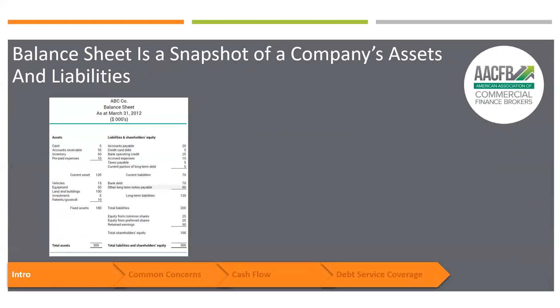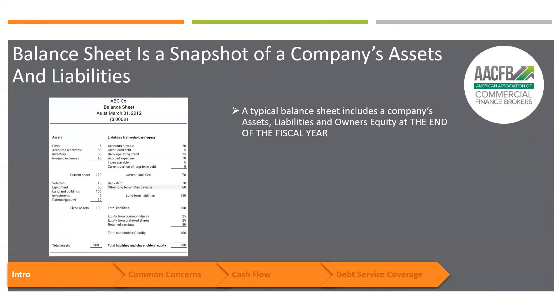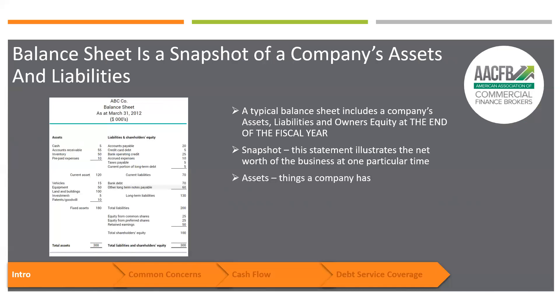Here is a balance sheet. A balance sheet is typically prepared at the end of the year, and it's a snapshot that illustrates the net worth of the business and the assets and liabilities. Net worth is the assets minus the liabilities. In this example, current assets are 120 and total assets are 300. Liabilities are 200, so shareholder's equity is 100. When I look at a balance sheet, the key component is the current portion of long-term debt — in this scenario, that's five.